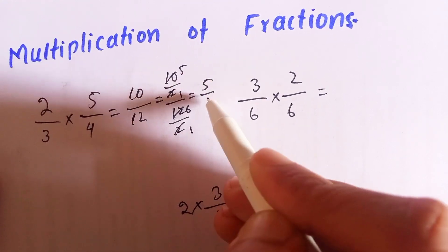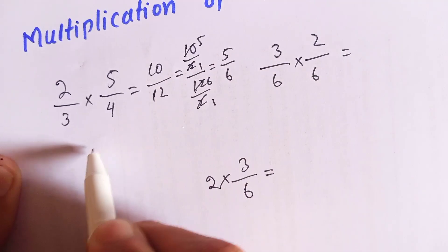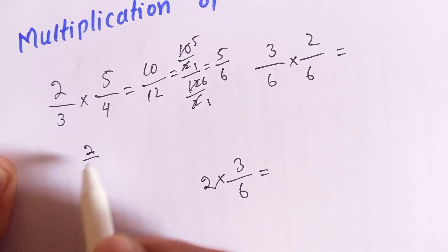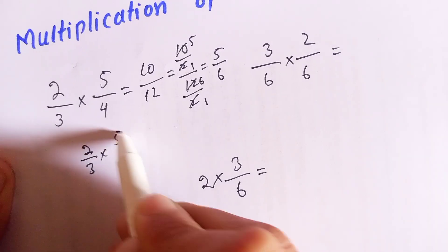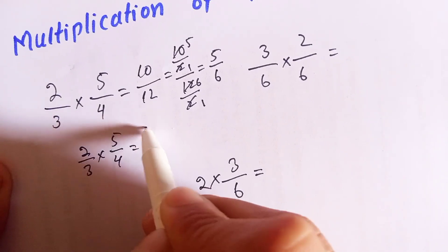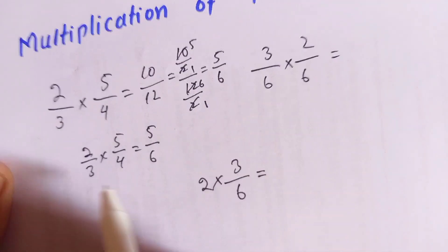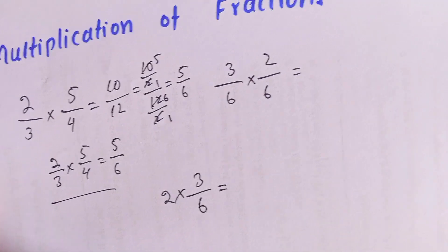So the answer will be five over six. The multiplication of two over three multiplied by five over four is equal to five over six. This is the final answer.